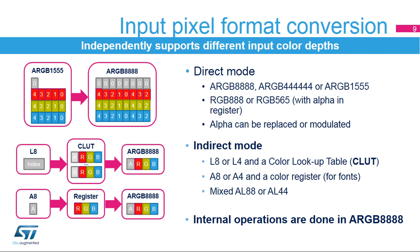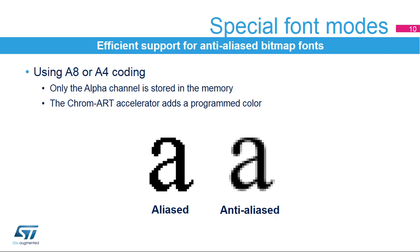All input color modes are transformed internally into ARGB8888 format to perform the blending operation. Specific modes can be used to efficiently manage texts and fonts — only the transparency value is stored in memory for rendering anti-aliased fonts. The color is added during the pixel format conversion process and can be programmed by the user. These modes are very efficient for storing high-quality bitmap fonts.